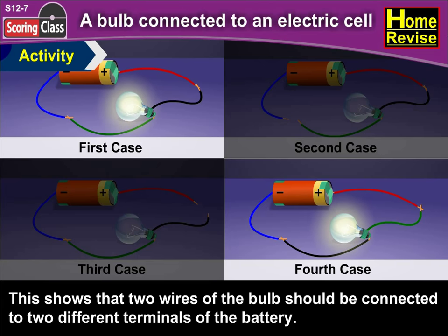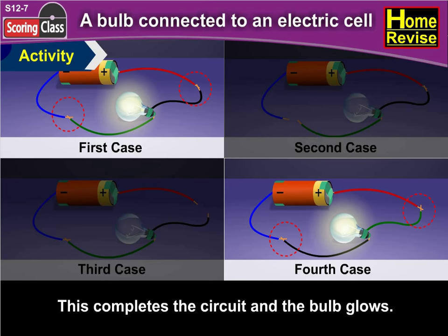This shows that two wires of the bulb should be connected to two different terminals of the battery. This completes the circuit and the bulb glows. Wonderful!